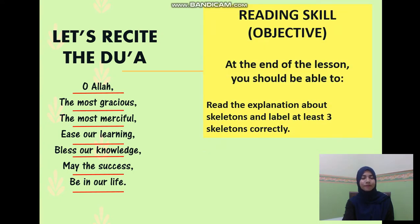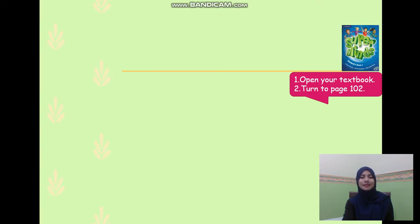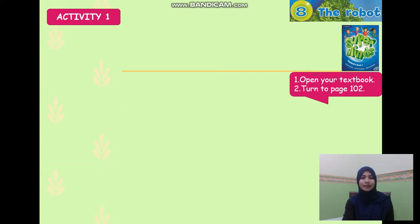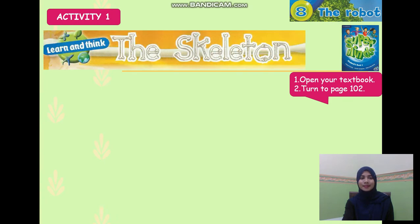Today's skill is reading. The objective is, at the end of the lesson, you should be able to read the explanation about skeletons and label at least three skeletons correctly. Now, I want you to open your Superminds textbook, turn to page 102 — Unit 8, The Robot. Activity 1: The Skeleton.